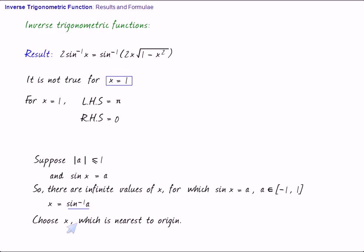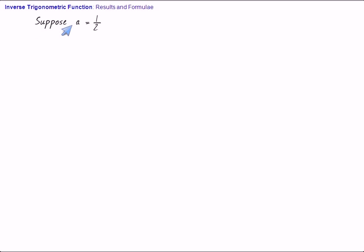So, we choose the value which is nearest to origin in case of sine. Just see the graph of sine and suppose a is half. So, if a is half, this is the graph of sine.